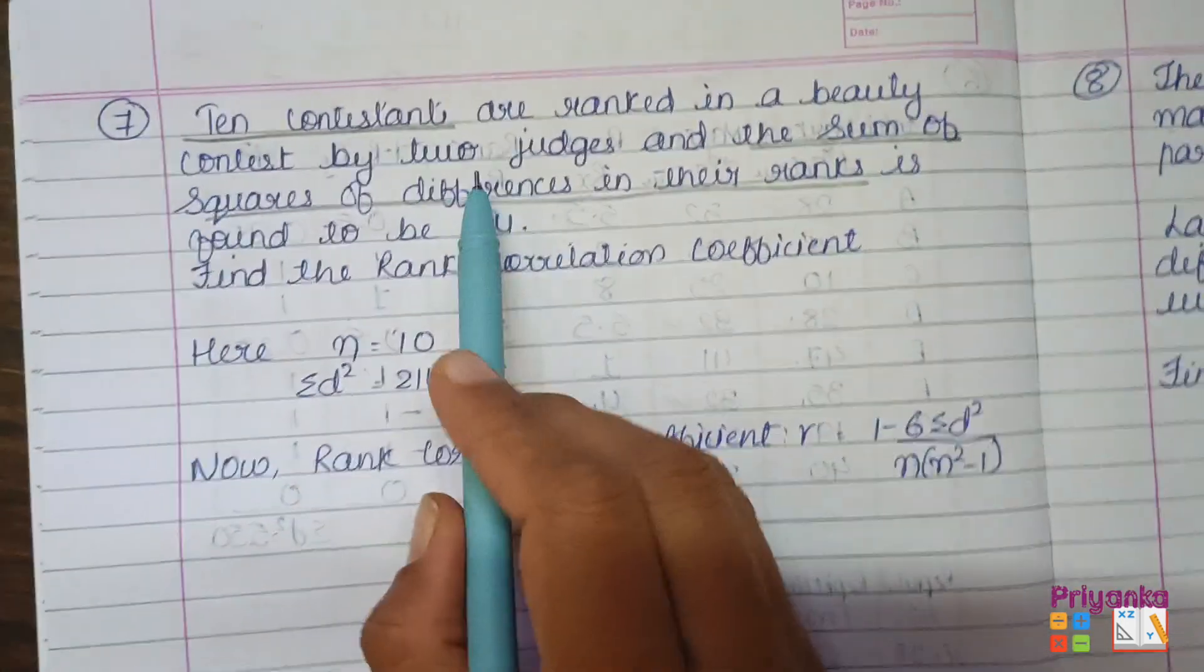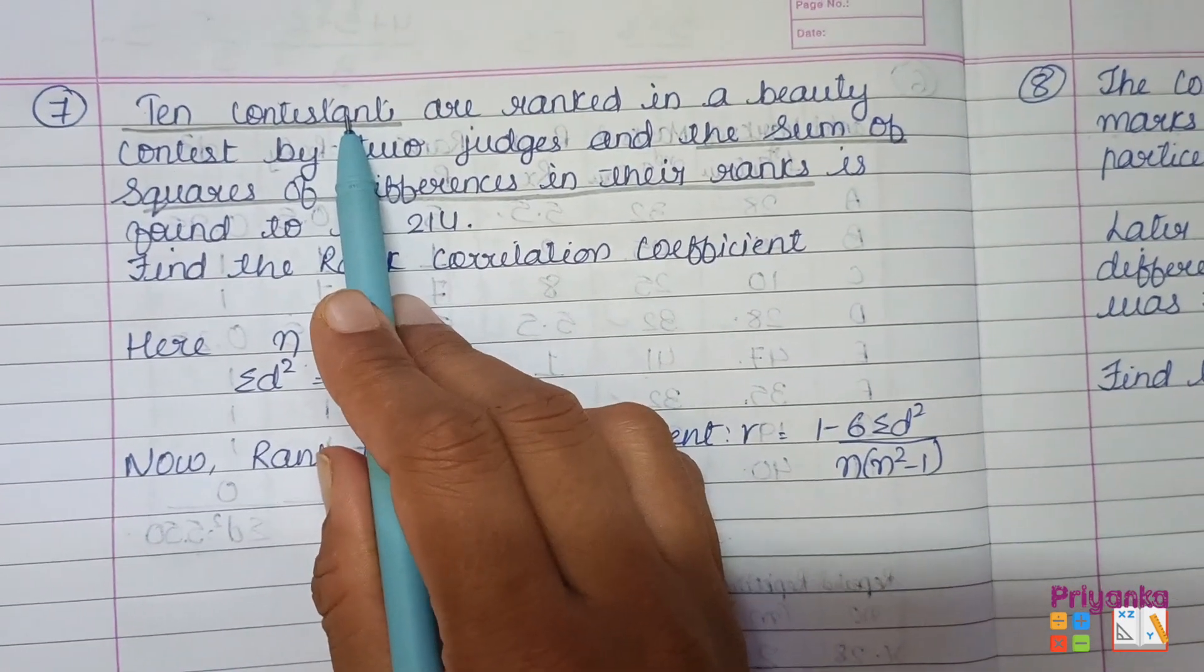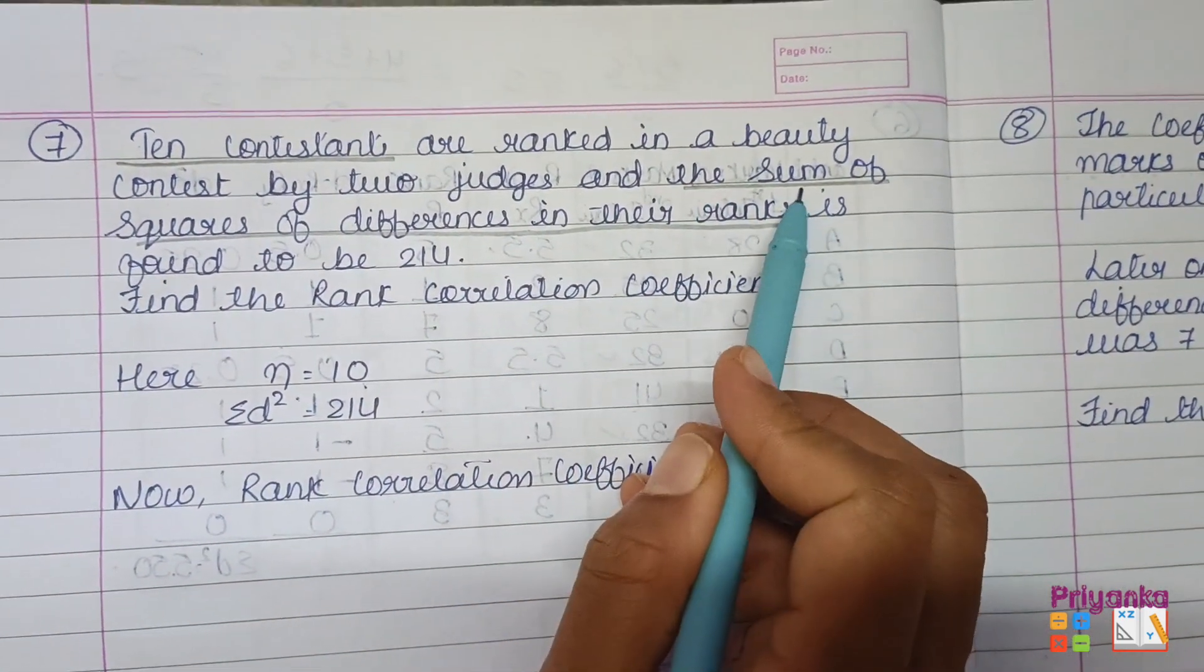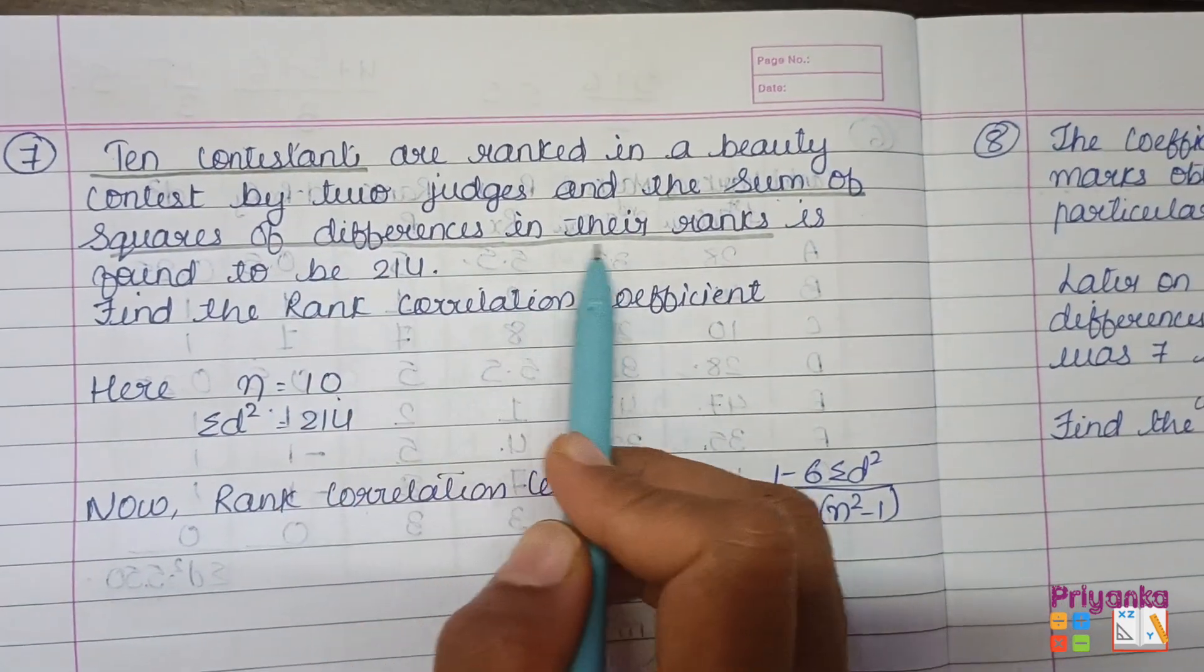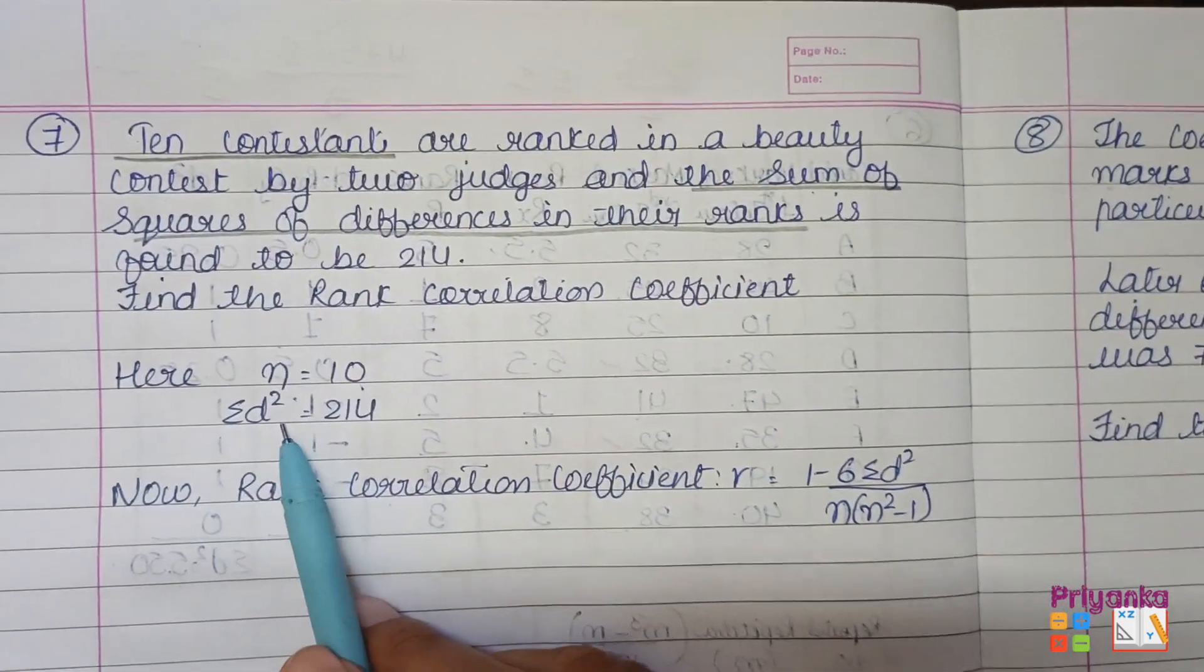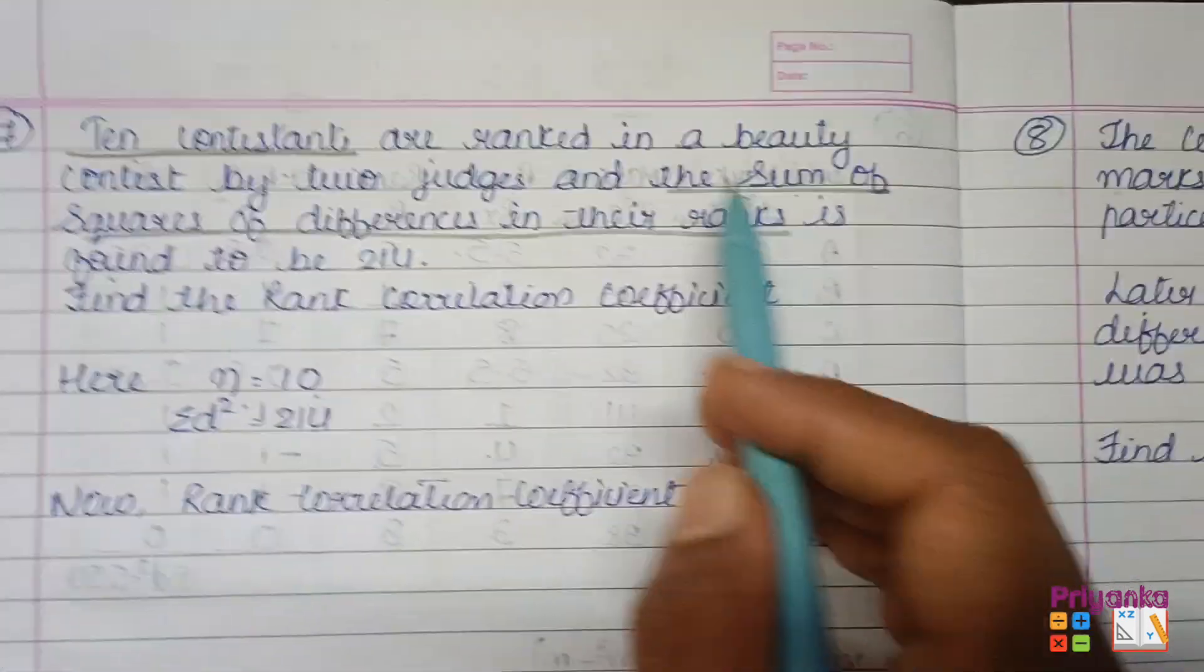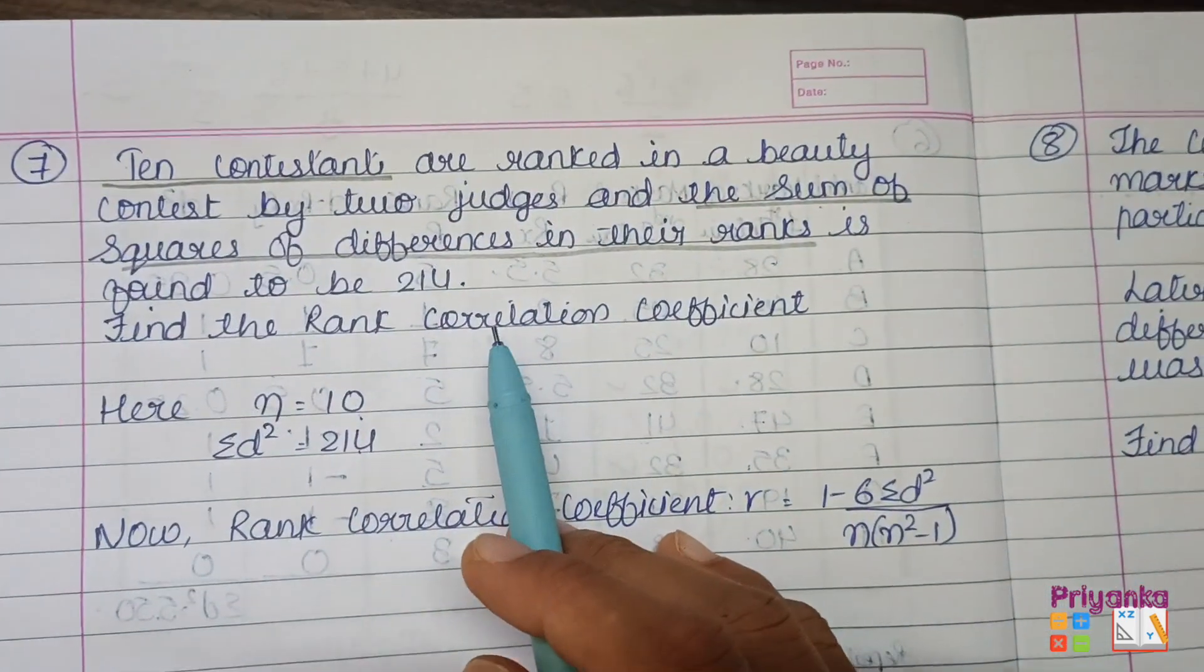Now this question, obviously 10 contestants means they are giving a hint that n is 10. Next, the sum, that is sigma of square of difference in their rank, that is your sigma d square, that is 214. So all the information is already given in the question.